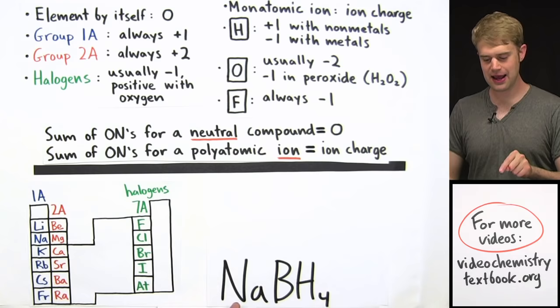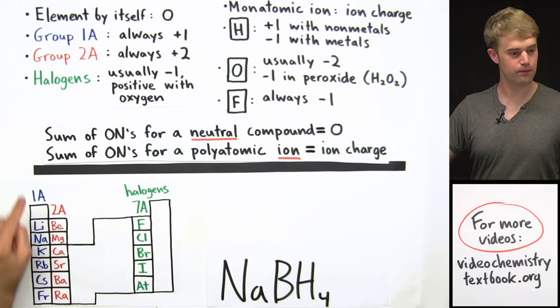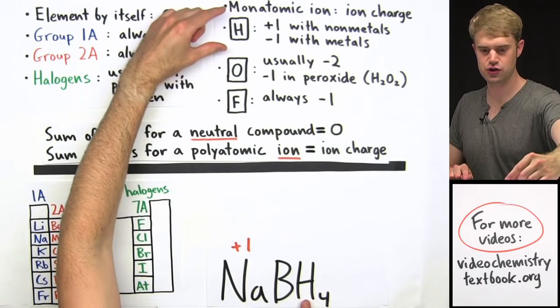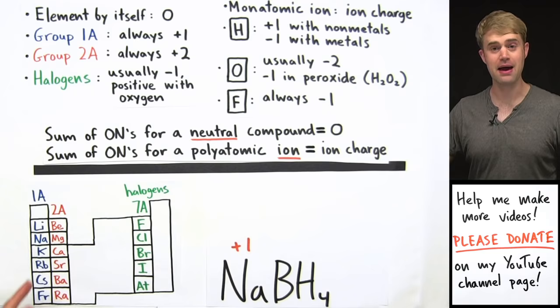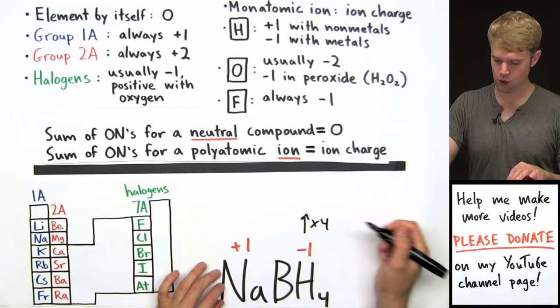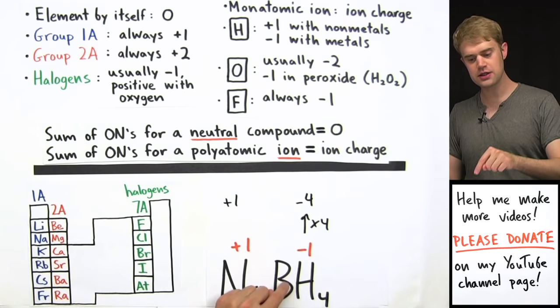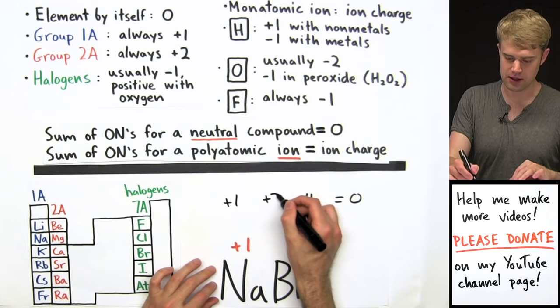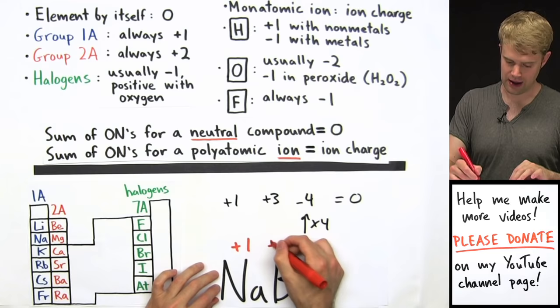NaBH4. Sodium, Na, is in group 1A, so it's plus 1. We don't have a rule for boron, B, so we'll figure it out. Hydrogen is plus 1 with nonmetals and minus 1 with metals. Sodium is a metal, so hydrogen has an oxidation number of minus 1 here. With 4 hydrogens: minus 1 times 4 equals minus 4 total. Plus 1 from sodium, minus 4 from hydrogen — boron's oxidation number must be plus 3, since plus 1 plus 3 minus 4 equals 0.